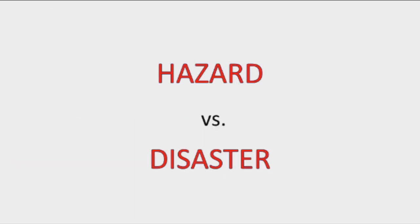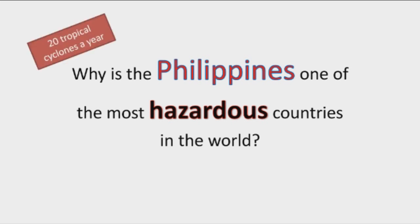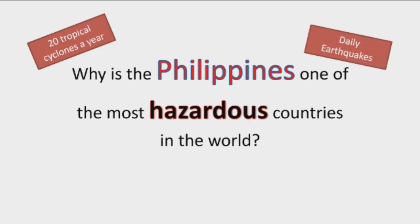Before we define the difference between hazard and disaster, let me ask: why is the Philippines one of the most hazardous countries in the world? One answer is that there are on average 20 tropical cyclones a year that pass through the Philippines, and we experience daily earthquakes, whether minor or major.